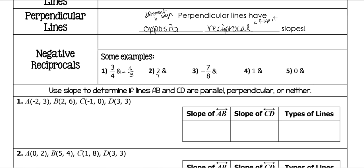A two is always over one, and this is positive, so we make it negative. If two is over one, then it becomes negative one-half when we flip it. This one is already negative, so we make the other one positive. When you flip it, seven-eighths becomes eight-sevenths, so it's positive eight-sevenths.